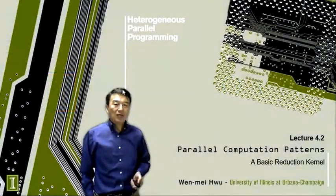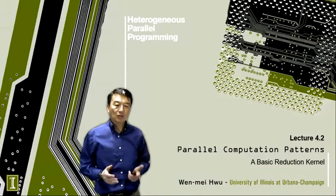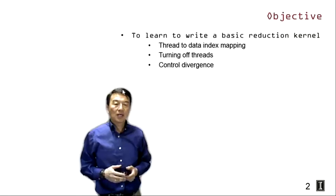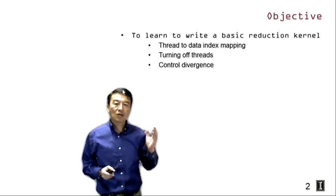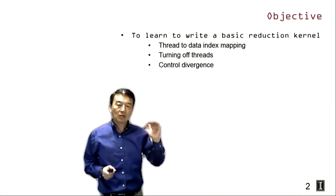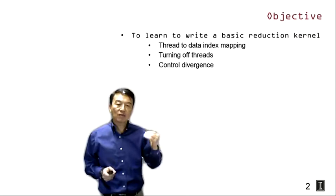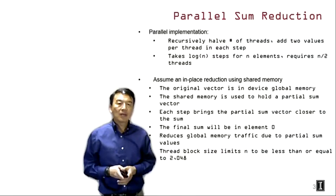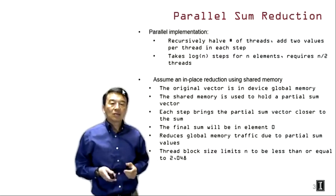Hi everyone, welcome back to the heterogeneous parallel programming class. We are at lecture 4.2. In this lecture we will be developing a basic reduction kernel. The objective is for you to learn how to write a basic reduction kernel. We're going to go through thread-to-index mapping and begin to go into the concept of turning off threads and control divergence in the kernel.